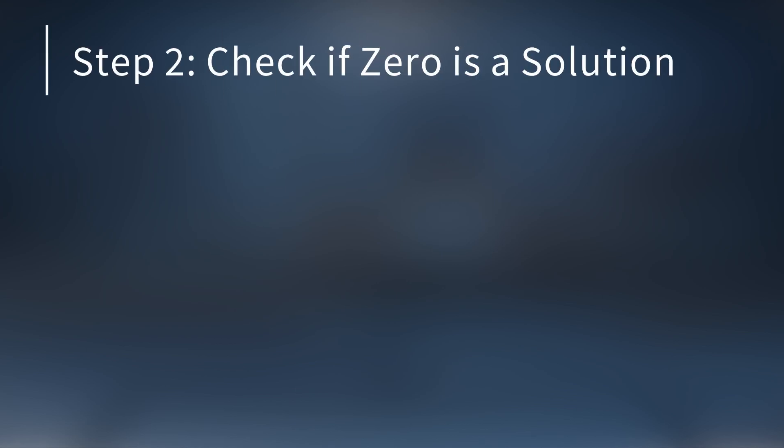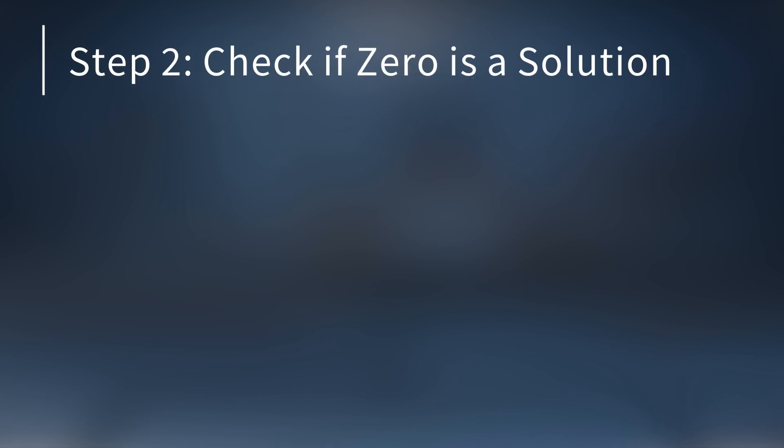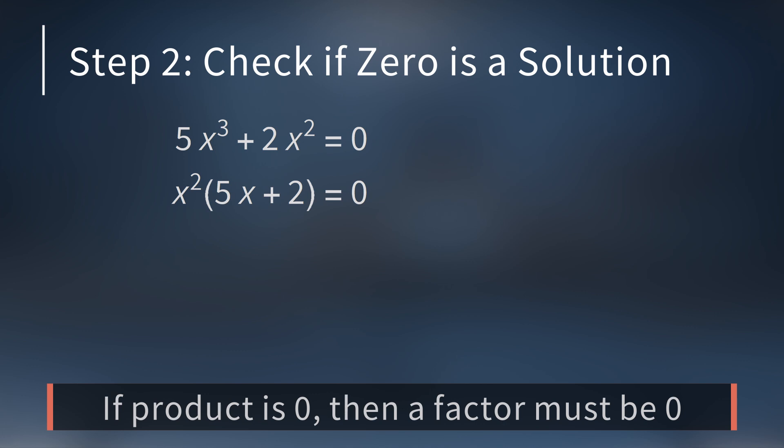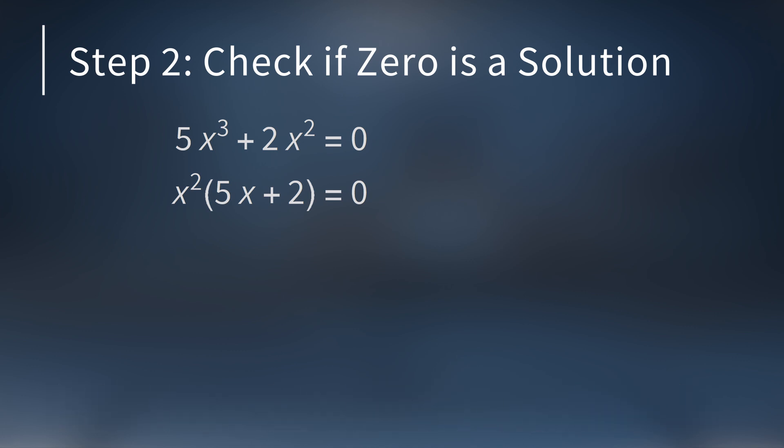Once our equation is in standard form, we'll check to see if 0 is a solution to the equation. For example, look at the equation 5x cubed plus 2x squared equals 0. On the left-hand side, we can factor out x squared. This gives us x squared times the quantity 5x plus 2 equals 0. A key principle in solving equations is that if a product of factors is 0, then one of the factors has to be 0.